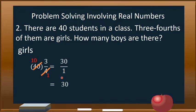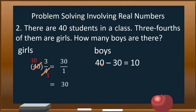There are 30 girls in the class. Since the problem is asking for the number of boys, we simply compute 40 minus 30. The total number of students minus the number of girls equals the number of boys. 40 minus 30 equals 10. Therefore, there are 10 boys in the class.